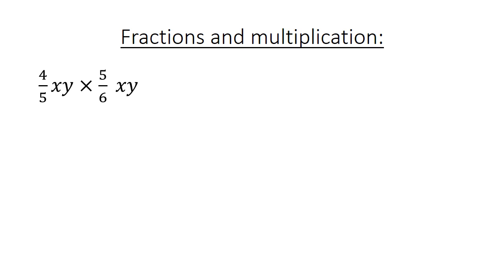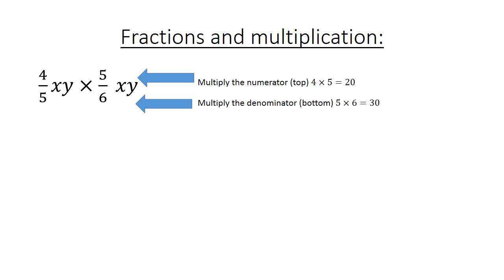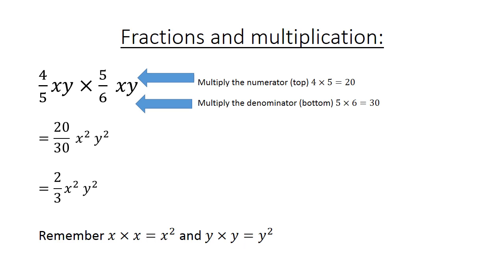Fractions and multiplication with algebra: 4 over 5xy times 5 over 6xy. First multiply the numerators: 4 times 5 equals 20. Multiply the denominators: 5 times 6 equals 30. Now you have 20 over 30. Then x times x equals x squared, and y times y equals y squared. Simplify to get 2 over 3 x squared y squared.